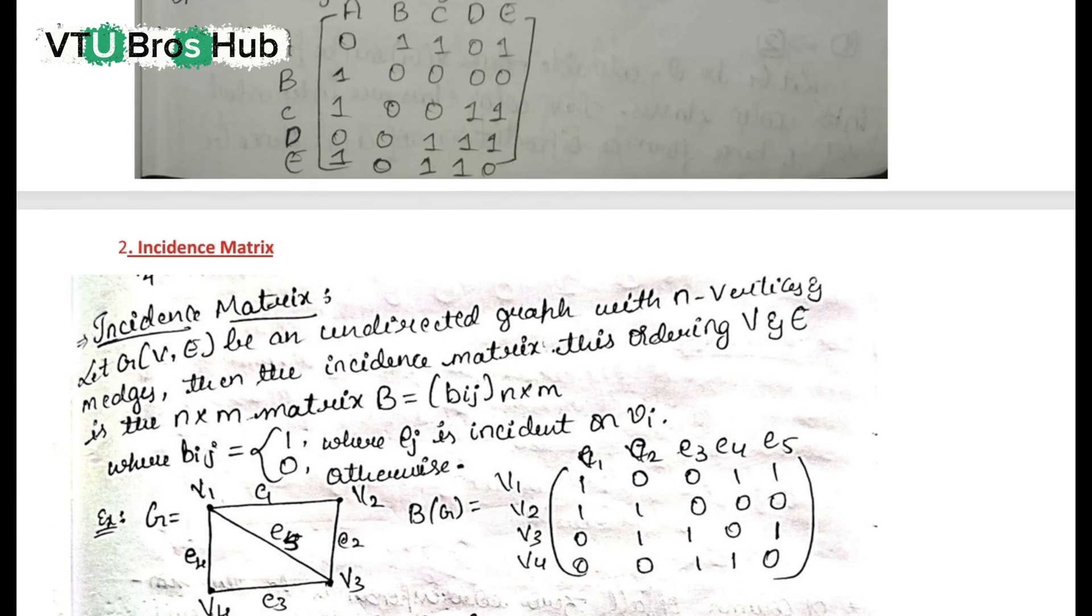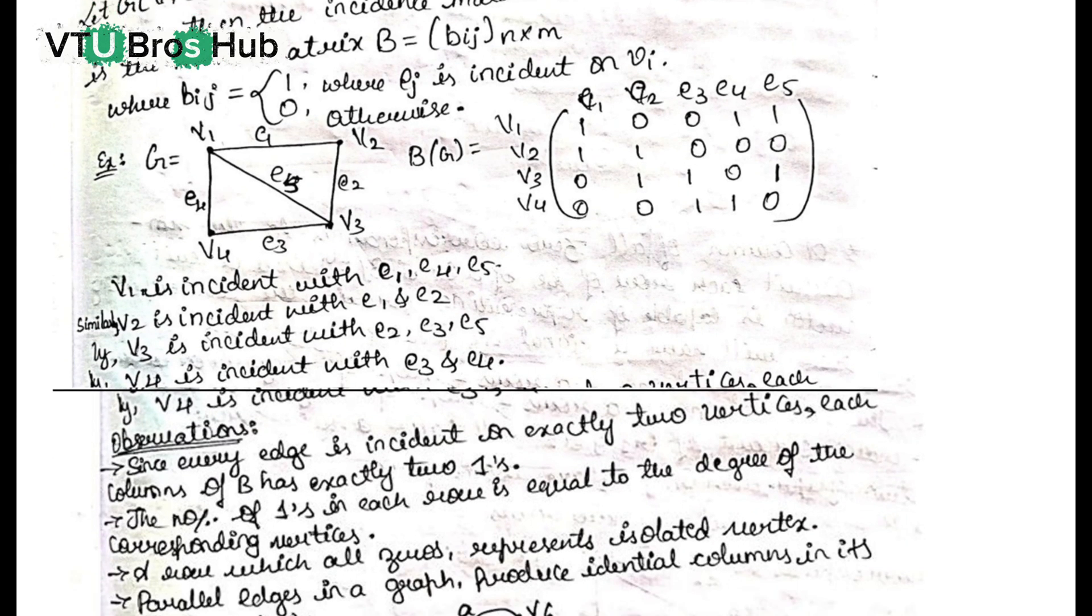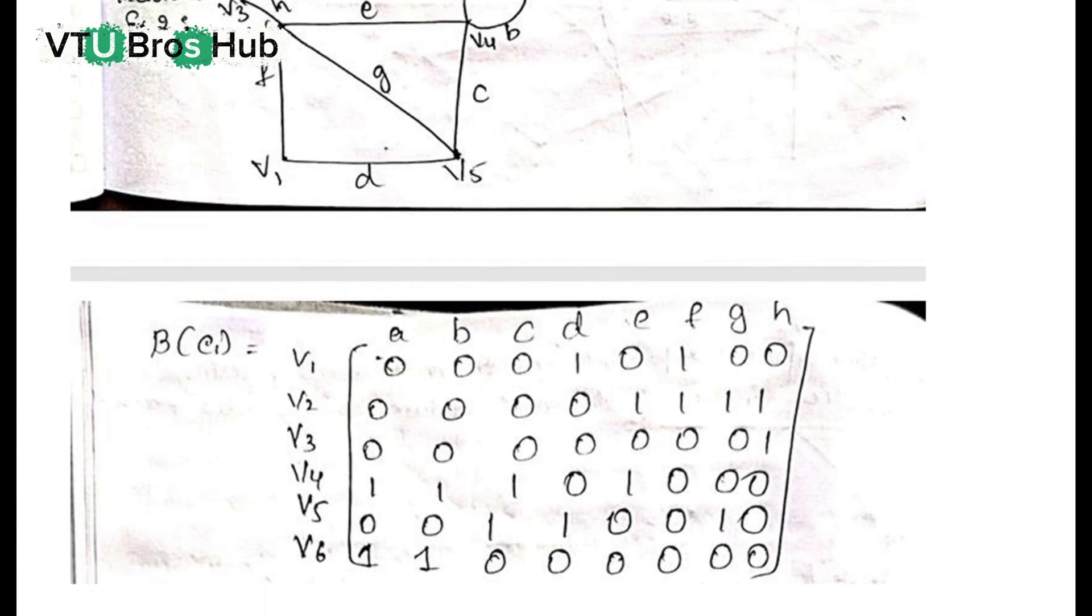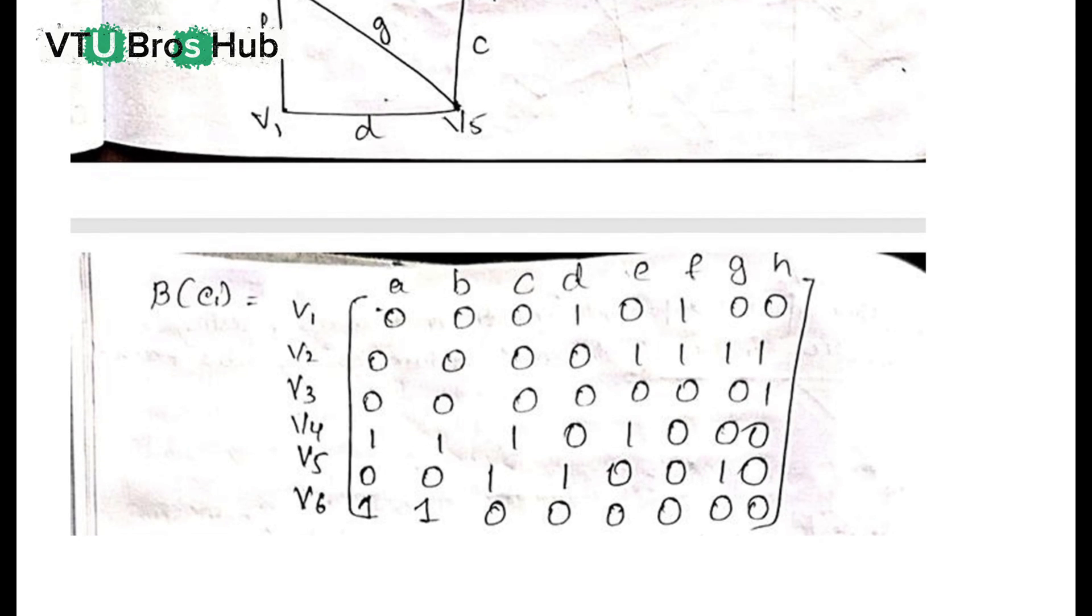Incidence matrix: Here, vertices are rows and edges are columns. Refer to the example on screen. You will see how edges connect to each vertex. In directed graphs, we use 1 and minus 1.